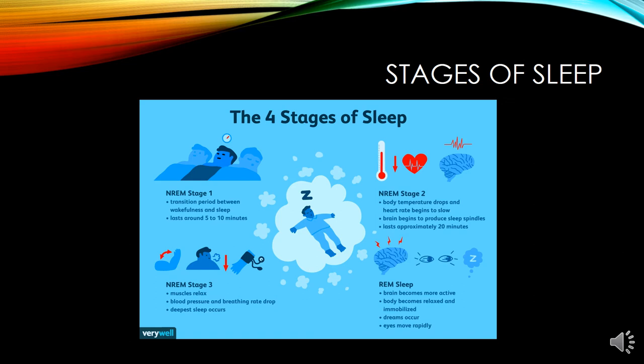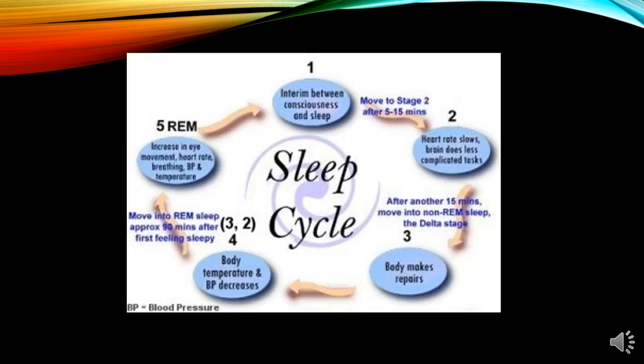In non-REM stage 3, the muscles are relaxed, blood pressure and breathing rate decrease, and deeper sleep occurs. The fourth stage is REM sleep, in which the brain becomes more active, the body becomes more relaxed and immobilized, dreaming occurs, and rapid eye movements take place. This picture shows how the sleep cycle takes place.